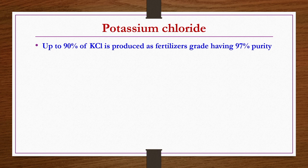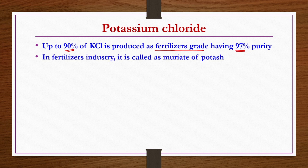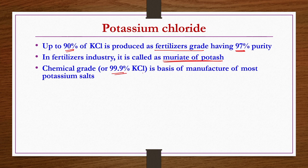Regarding potassium chloride production: 90 percent is produced as fertilizer grade, having 50 to 97 percent purity. Some fertilizers require only about 50–51 percent KCl, while fertilizer grade can go up to 97 percent purity. If you want to produce other potassium derivatives, you need chemical-grade potassium chloride at 99.9 percent purity. In fertilizer industries, KCl is also known as muriate of potash, and 99.9 percent pure KCl is used for manufacturing most other potassium salts.